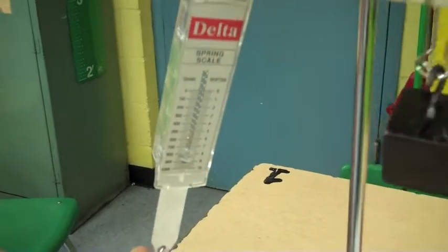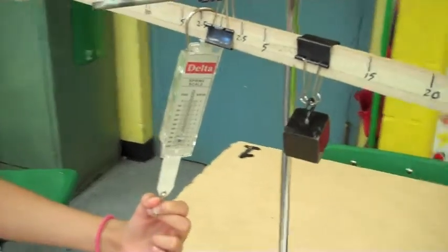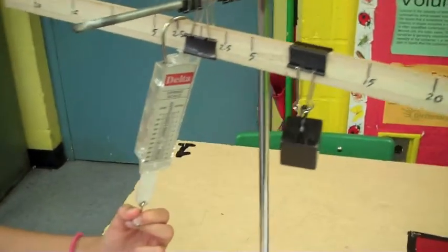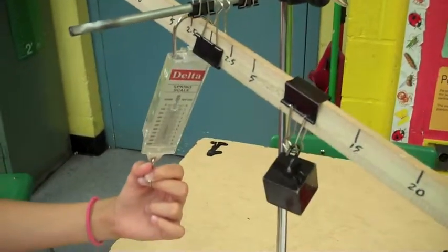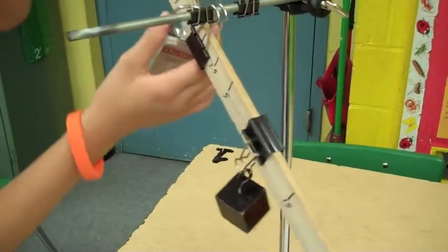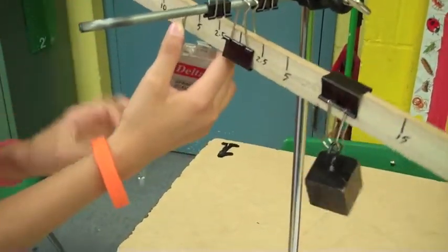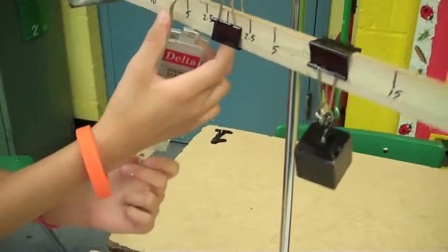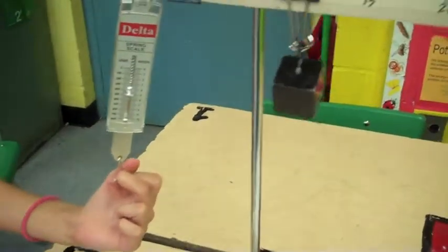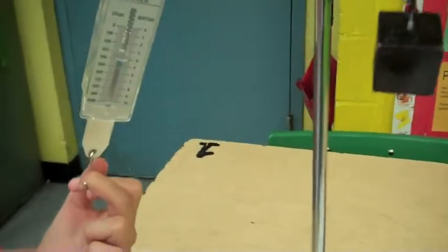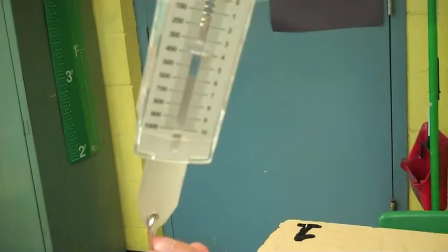We're now going to move the spring scale to the 5 centimeter position. So we're going to take the spring scale and move it to 5 centimeters and try that one more time. The load stays where it is, and it goes to 400 grams.